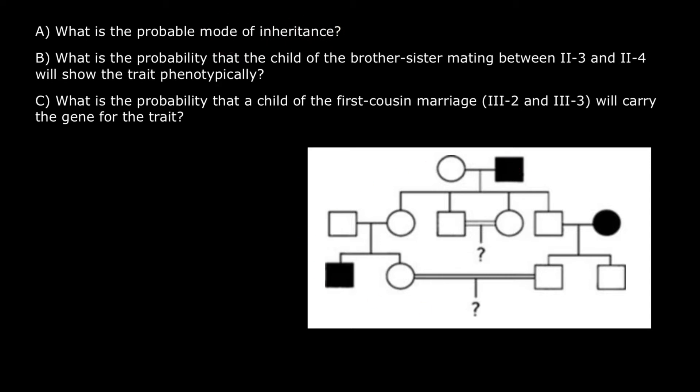Take a look — we have one, two, three generations here. We see, for example, that two unaffected people have an affected child. This gives us information that this is a recessive genetic disorder. But is it X-linked or not? Because we see here that both males and females are affected, we assume that this is an autosomal recessive genetic disorder.